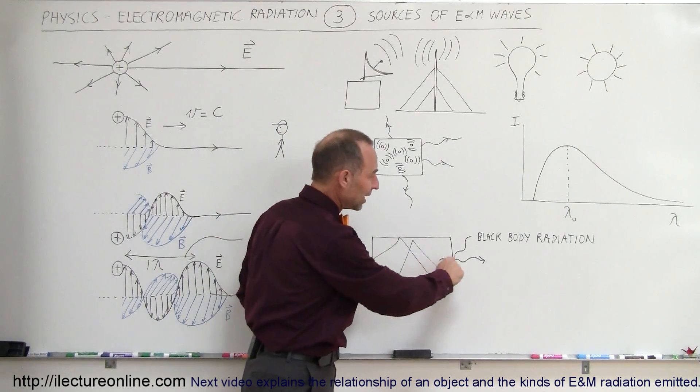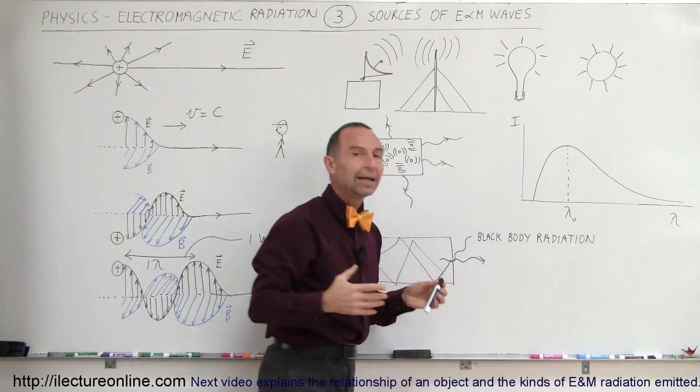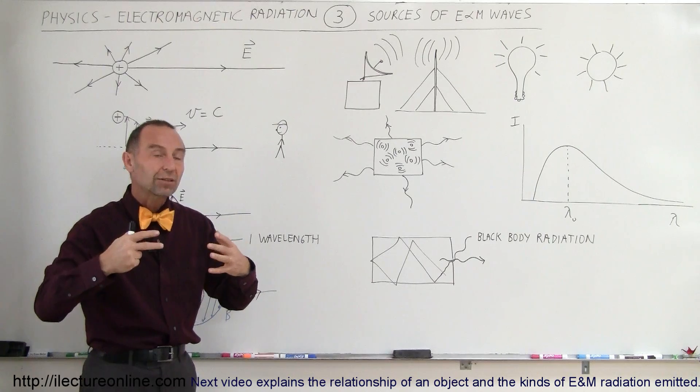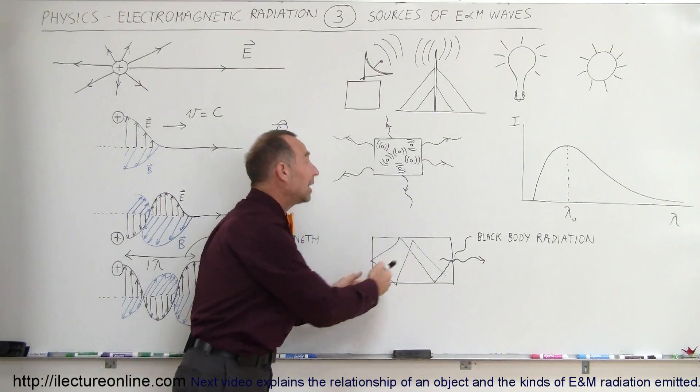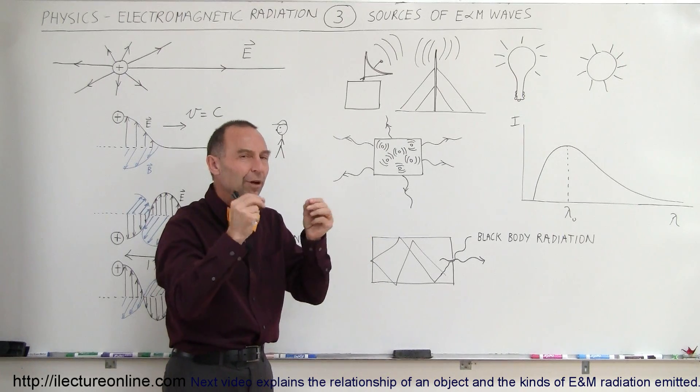And if we then study the radiation coming out, it will look like this. That's where this curve came from. It's simply the distribution of the energies that come from an object, be it from inside a black body radiation box or simply from any object that radiates energy due to vibration of the atoms.